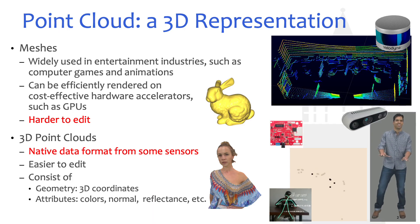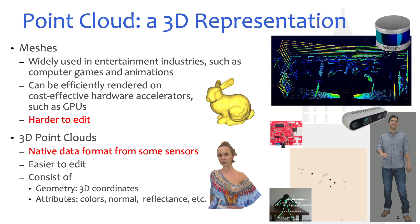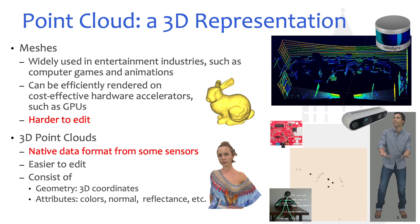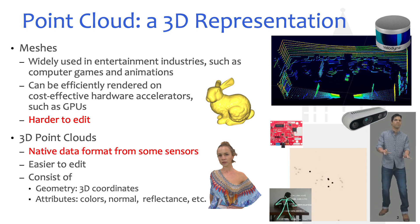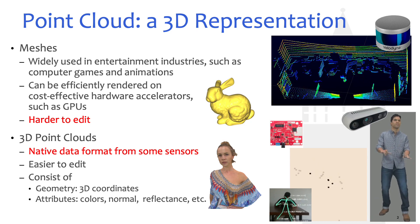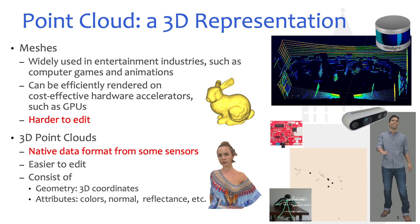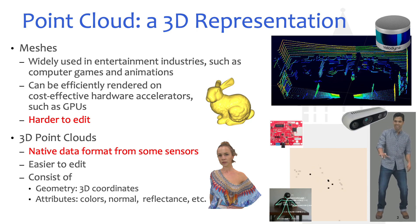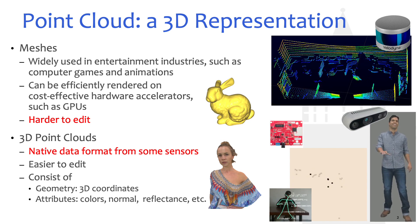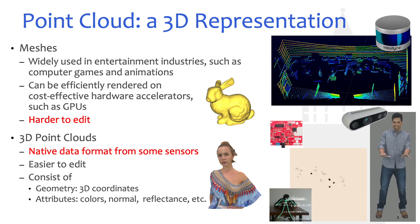Two of the most popular 3D representations are meshes and 3D point clouds. Compared to meshes, 3D point clouds are easier to capture. As we show on the right-hand side, you can use a LiDAR, a millimeter wave radar, or an RGB camera to capture dynamic 3D point clouds. Each point cloud consists of many points, and each point comes with 3D coordinates — the geometry information — as well as optional attributes such as colors, normal, reflectance, and so on.